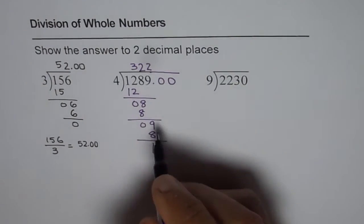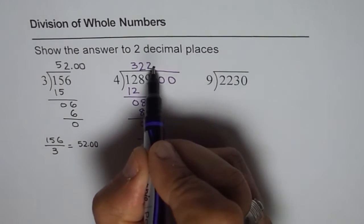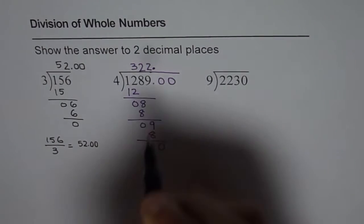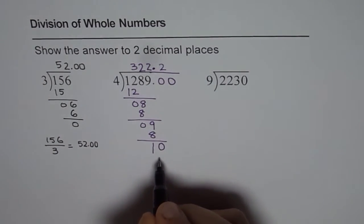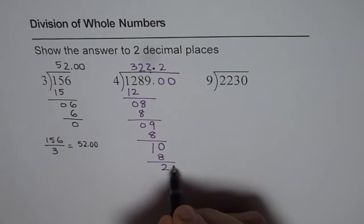Now we can bring down 0. Whenever you bring down a number which is after decimal, you should put decimal in the quotient. 10 divided by 4 - 4 times 2 is 8, 3 is 12, so you can't use 3. So you can use 2. 4 times 2 is 8. You are left with 2. Bring down the next 0, which is 20.